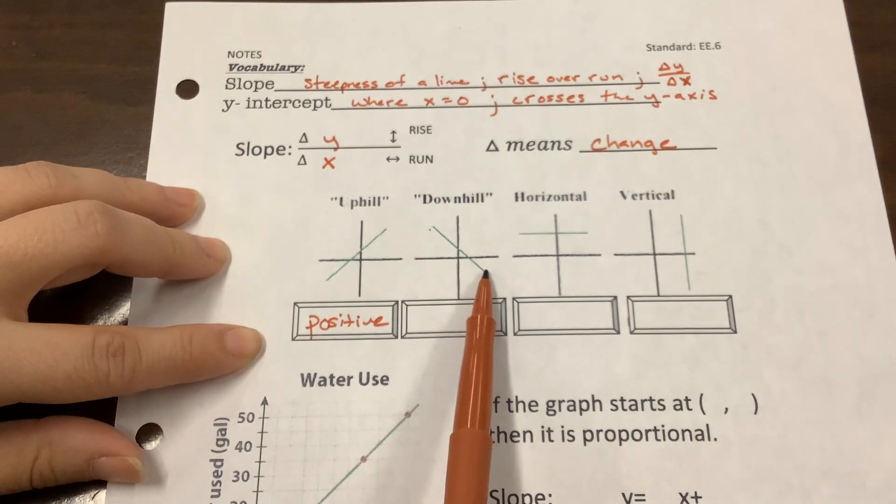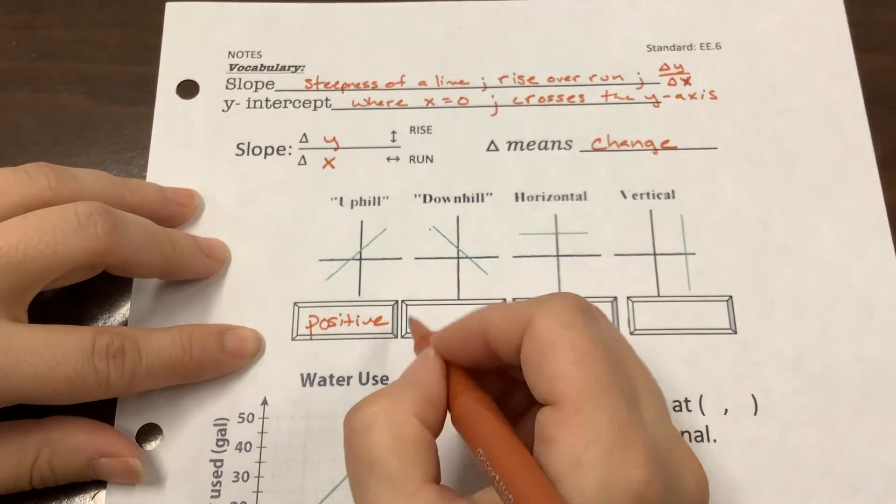This one, from left to right, it's going downward, so that is a negative slope.